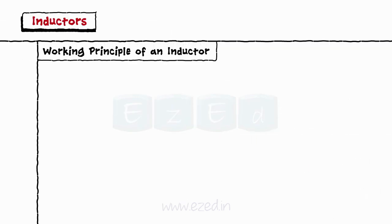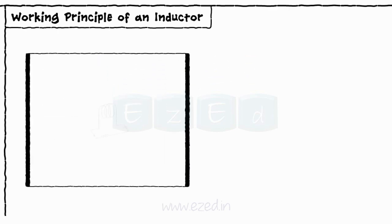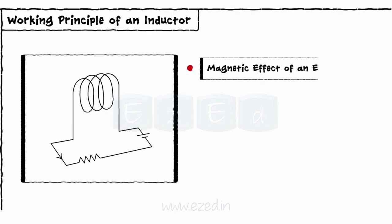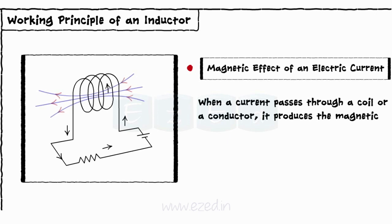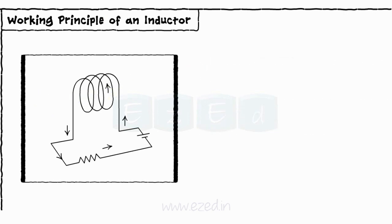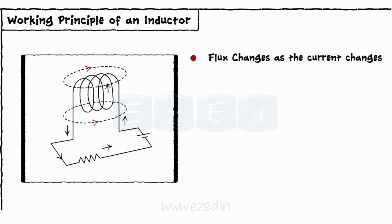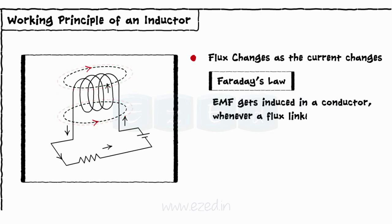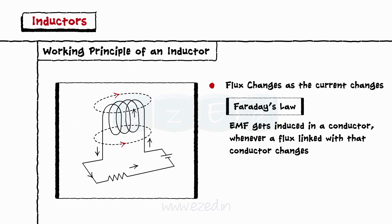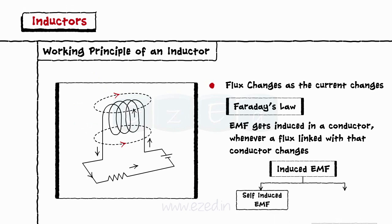Let's study the working principle of an inductor. Consider the circuit shown. According to the magnetic effect of an electric current, when a current passes through a coil or a conductor, it produces a magnetic field around that conductor. This forms the basic principle of an inductor. The magnetic field generates flux around the conductor. This flux changes as the current flowing through an inductor changes. According to Faraday's law, EMF gets induced in a conductor whenever the flux linked with that conductor changes. This EMF is of two types: self-induced EMF and mutually induced EMF.